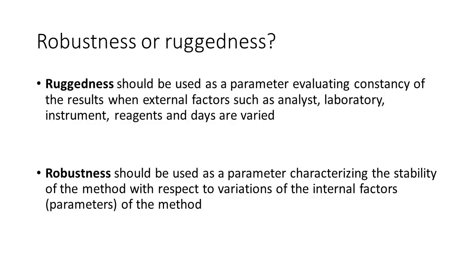Along similar lines, it has been suggested that ruggedness should be used as a parameter evaluating constancy of results when external factors such as analyst, laboratory, instrument, reagents, and days are varied. And robustness should be used as a parameter characterizing the stability of a method with respect to variation of the internal factors of a method.